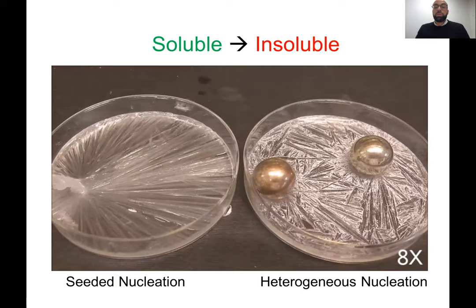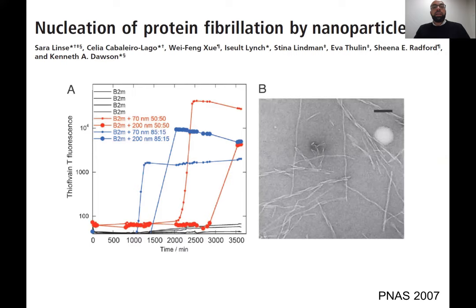One of the most neglected pathways for amyloid formation is heterogeneous nucleation — not catalyzed by a protein at all, but catalyzed by a surface. It's a very well-studied phenomenon in the science of phase transition and is actually the most likely pathway for crystallization and many other phenomena. Sarah Linse at Lund University showed in 2007 that nanoparticles can act as catalytic surfaces which induce the transformation of proteins into the amyloid state.